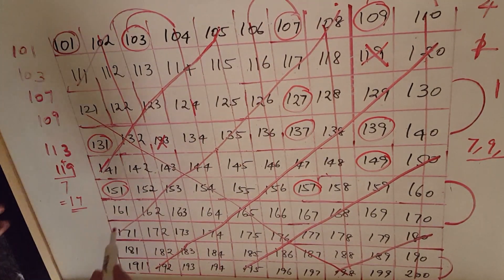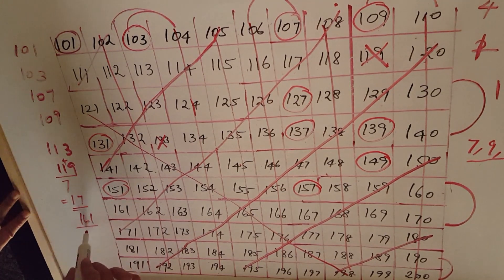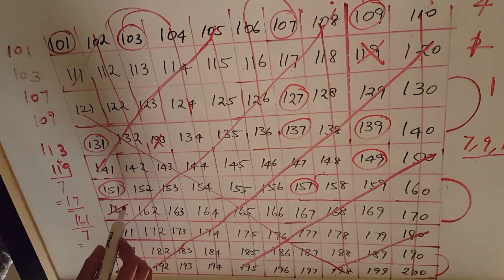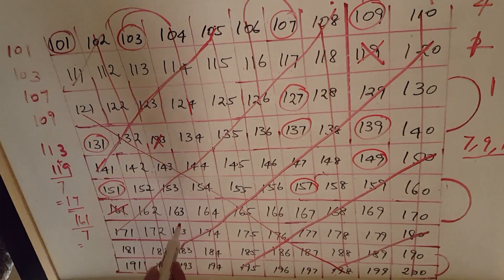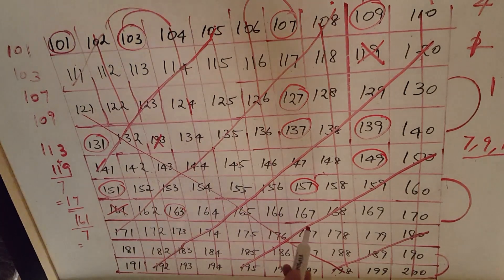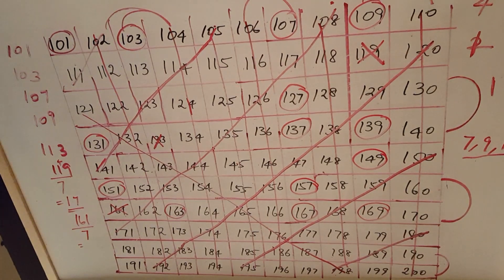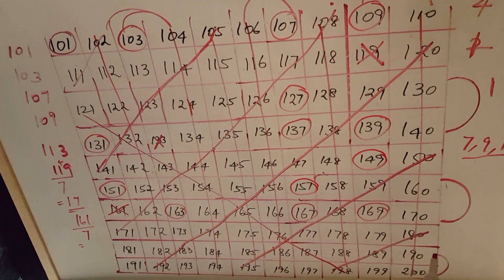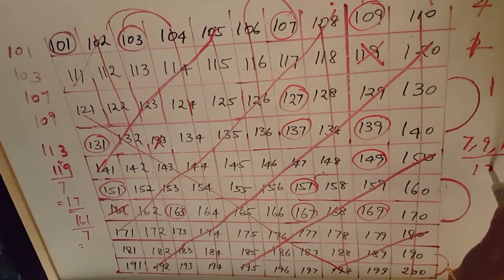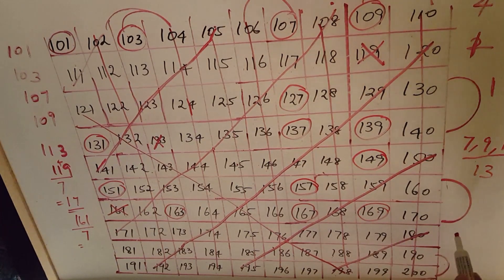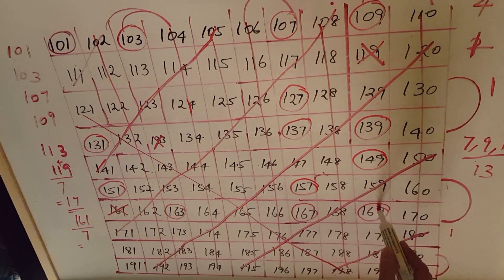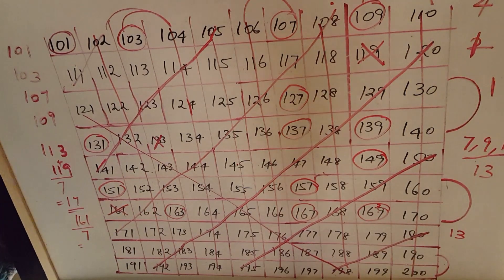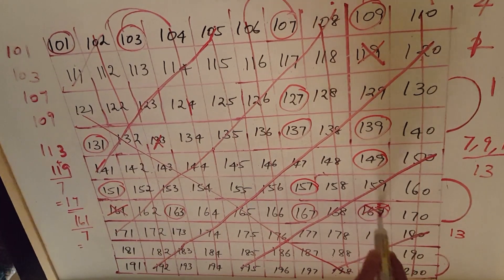Check this range: 161 is divisible by 7, so you cut it. Remaining are 163, 167, and 169. Check with 7, 9, and 11 tables: 163 and 167 are not divisible by 7, 9, or 11. But 169 is divisible by 13 — check with the 13 times table: 13×13 = 169 — so 169 is not a prime number. Therefore 163 and 167 are prime numbers.